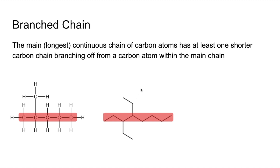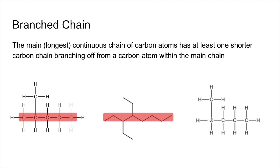Now I'm going to show you this one as well, because there's a common mistake I see as a teacher. Some students might think this is branched — it kind of looks branched, very similar to that one. But that's a continuous carbon chain, so it's not branched.